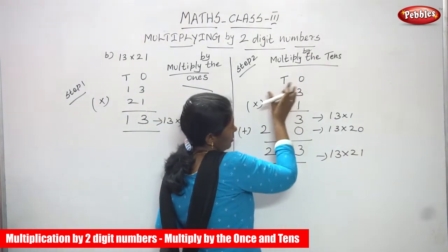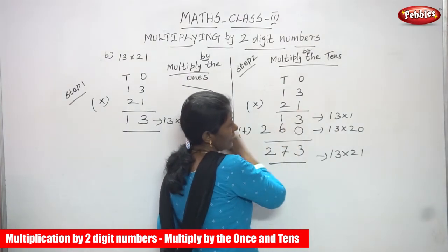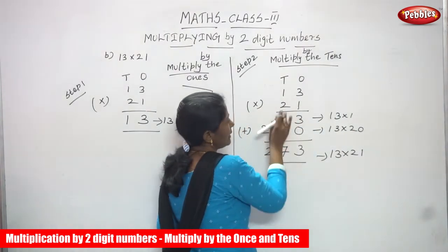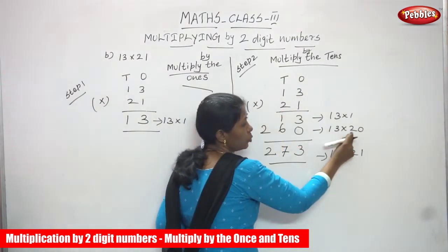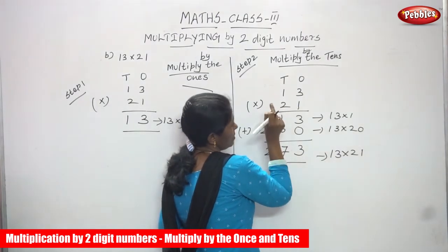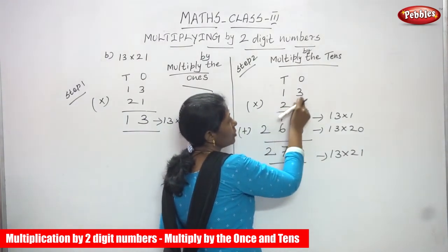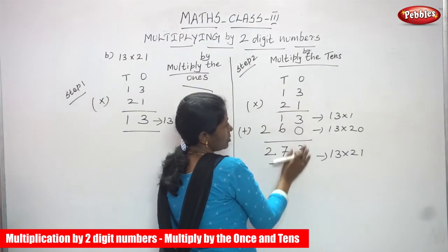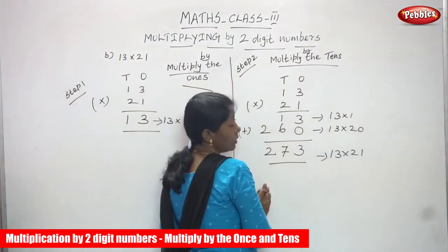Again write the place value, then write the numbers according to place value: 13 into 21. Already I've written 13 into 1, so you write that as it is. Now start Step 2, multiplying by the tens. The 2 means 2 tens, that is 2 into 10, giving 13 into 20. So 2 is going to multiply by 13. Write 0 in the ones place, then 2 times 3 is 6 in the tens place, and 2 times 1 is 2. Multiplying by the ones is done, multiplying by the tens is done.